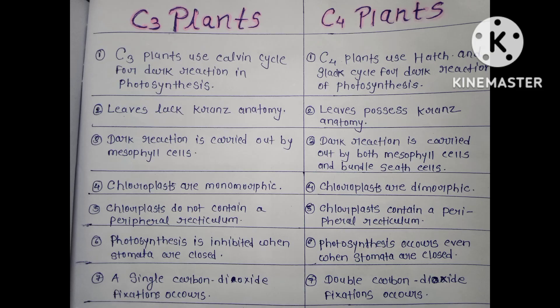Welcome back guys. In this video we discuss the difference between C3 and C4 plants. C3 plants use the Calvin cycle for the dark reaction in photosynthesis, and C4 plants use the Hatch and Slack cycle for the dark reaction of photosynthesis.